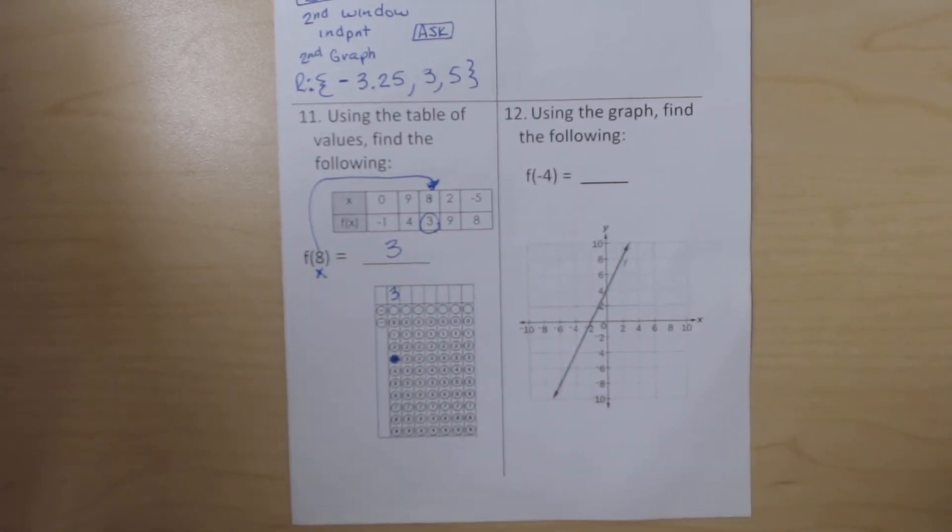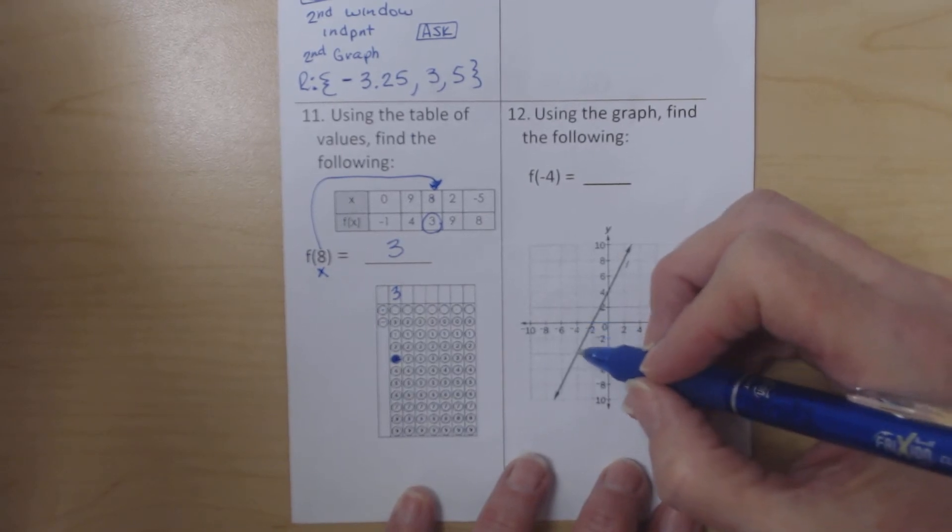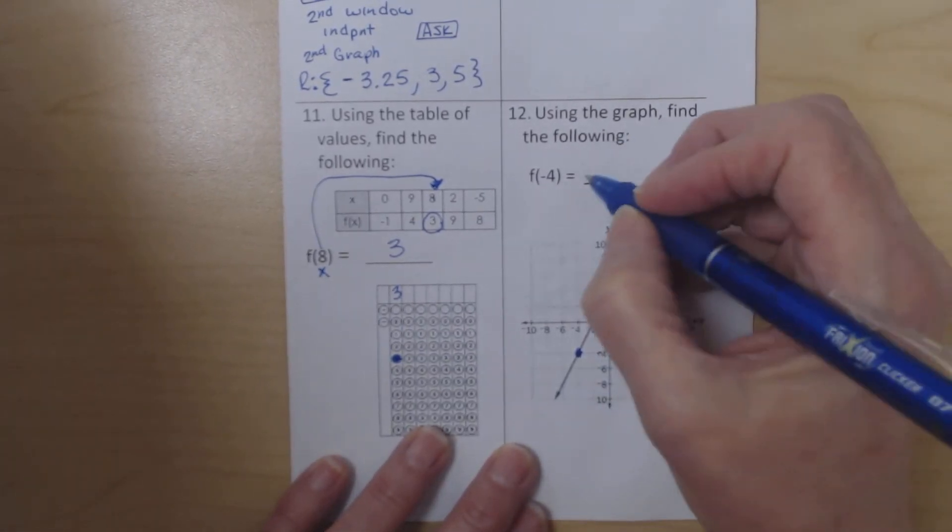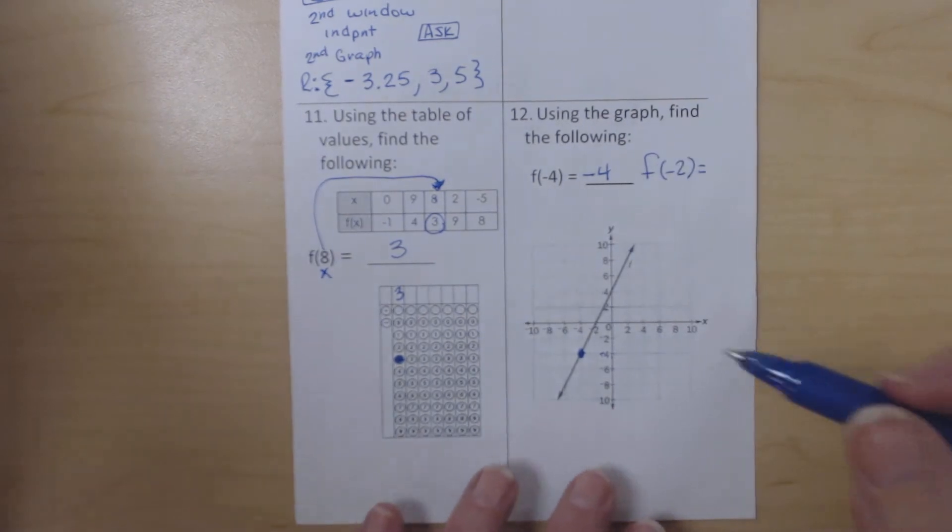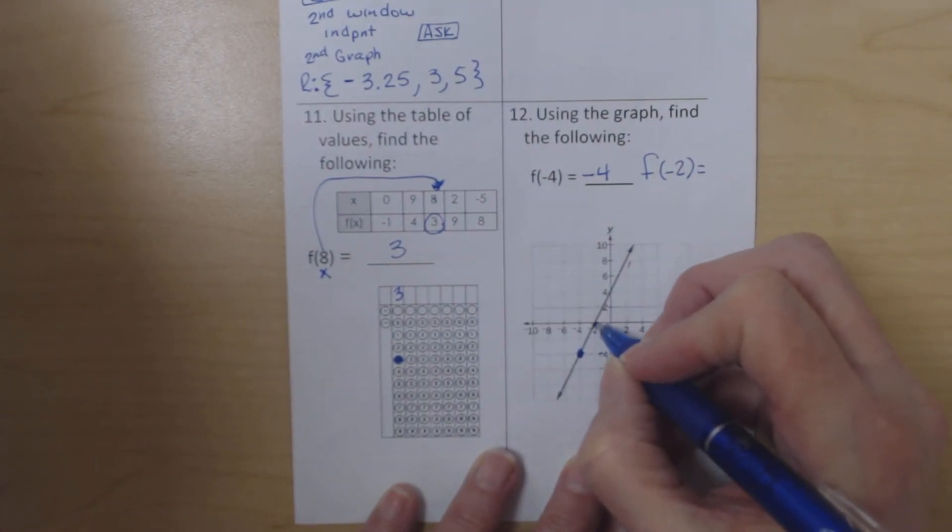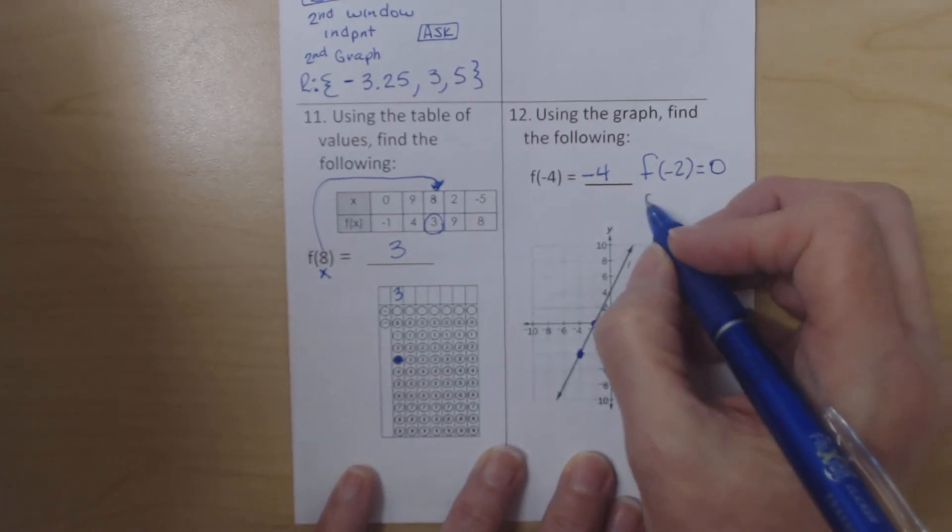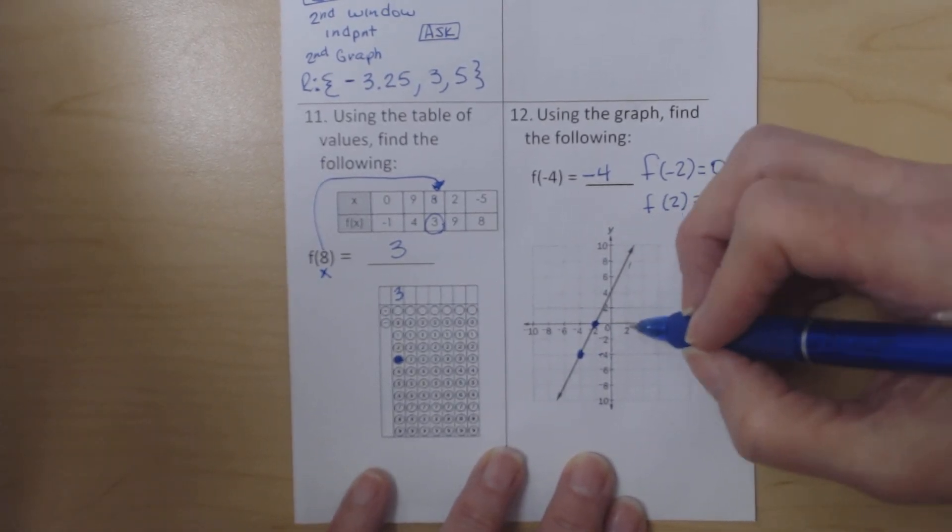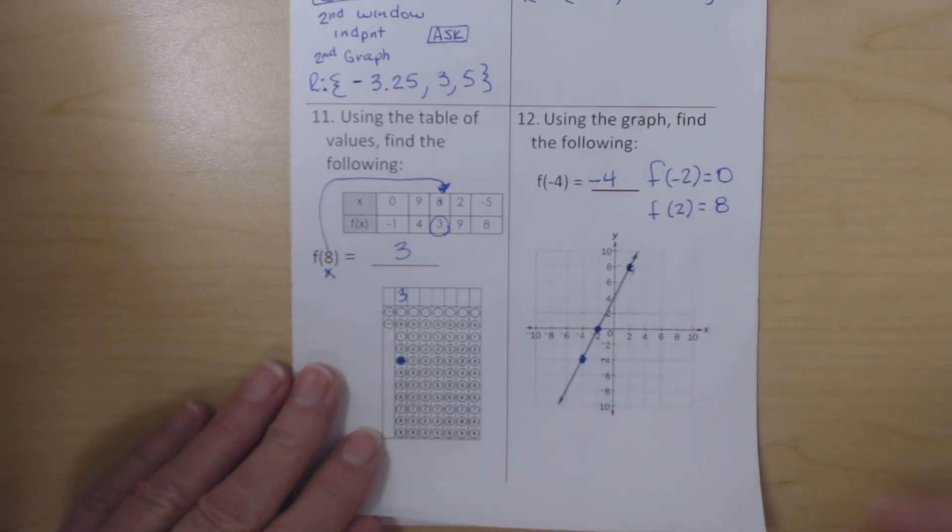For number 12, we are going to use the graph to find f(-4). So I go to the x value of -4 and I follow it down until it hits the graph. And then I look at the y value of this point, which is also -4. I can do the same thing for f(-2). What is the y value when x is -2? So I go to where x is -2 and it happens to be on the graph already. The y value along there is 0. I could also do f(2). So I go over here to where x is 2 and I go all the way up here. Well what is that y value? Well that y value is 8. So as long as I am on the graph itself, all I need is the y value of that ordered pair.